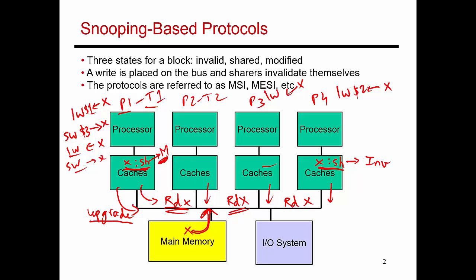That copy is in modified state, which means this is the only valid copy of data. Even main memory does not have the latest copy of data because all of these changes have been made locally in this cache. So that cache copy of X is the only valid copy of data.